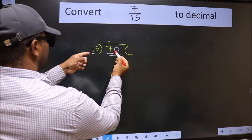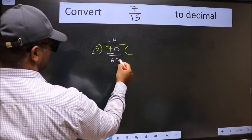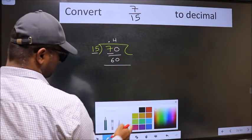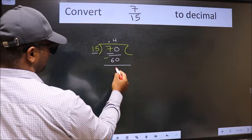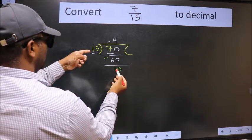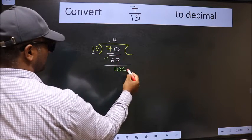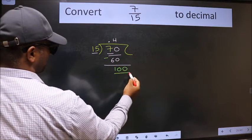A number close to 70 in the 15 table is 15 fours, 60. Now, we should subtract. We get 10. 10 is smaller than 15, and we already have the decimal. So, directly take 0.